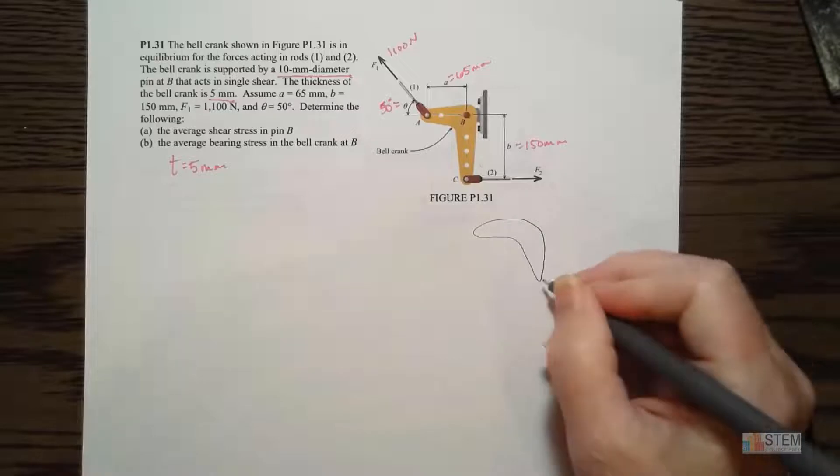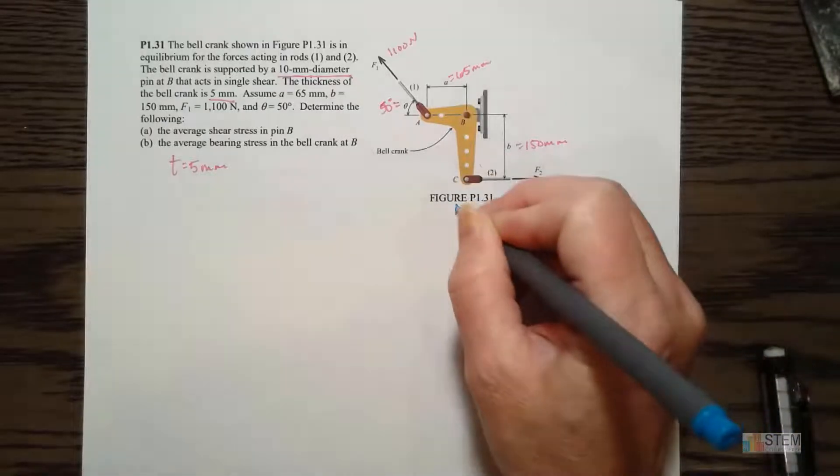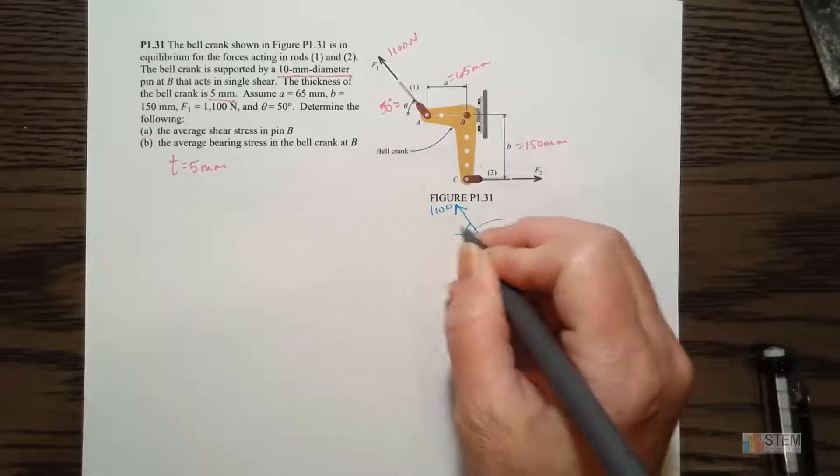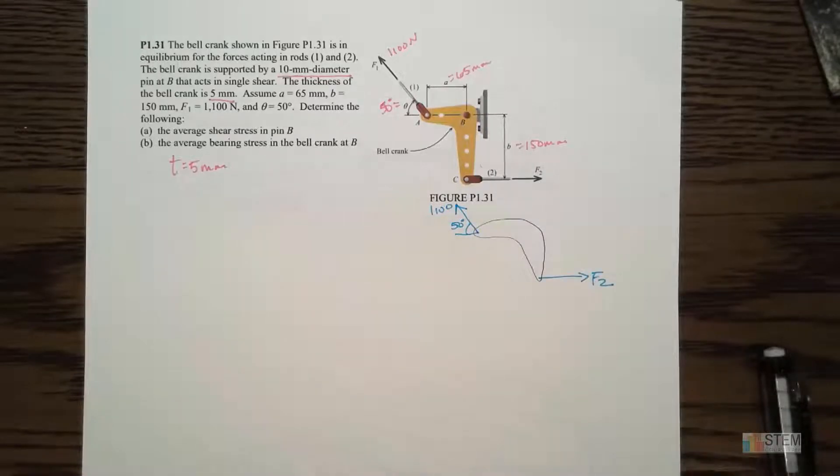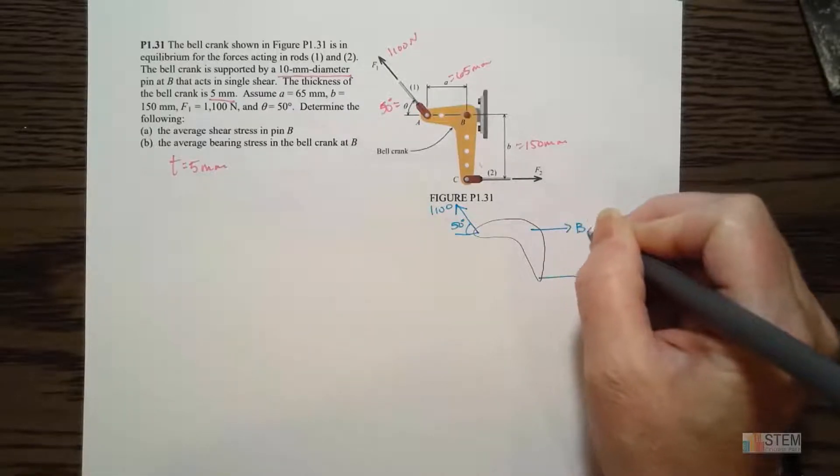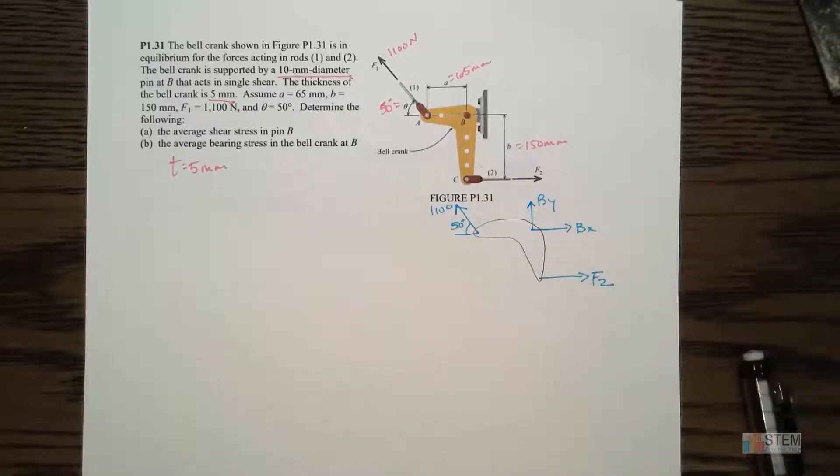So we've got F2 right here, and then we've got F1 here, which is 1100 newtons. This is at an angle of 50, and then we've got this pin at B. So what forces do we have due to a pin? We've got X and Y, right? So I'm just going to say they're positive, so X there, and then BY there. Now, again, I don't know if that's the correct direction or not. We'll find out sooner or later when we do our equations.